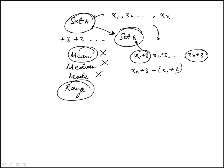And since they're both being increased by three, the difference remains the same. So the range would be the same. The answer is choice D.